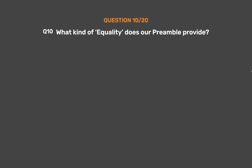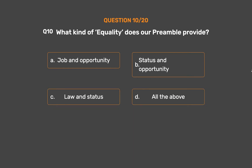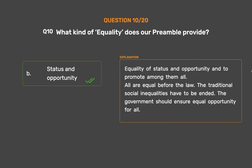Question 10: What kind of equality does our preamble provide? Option A: Job and opportunity. Option B: Status and opportunity. Option C: Law and status. Option D: All the above. The correct answer is Option B: Status and opportunity. Equality of status and opportunity — all are equal before the law. The traditional social inequalities have to be ended. The government should ensure equal opportunity for all.